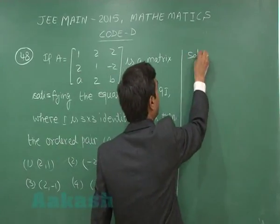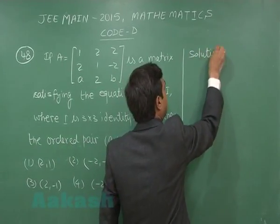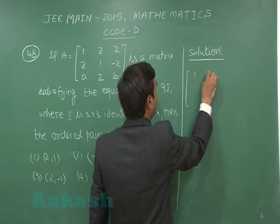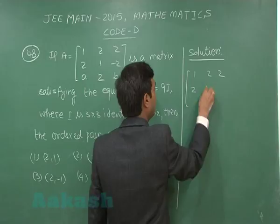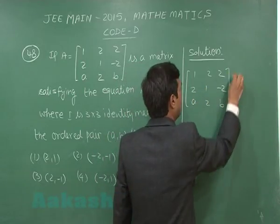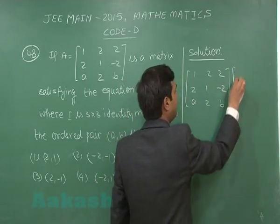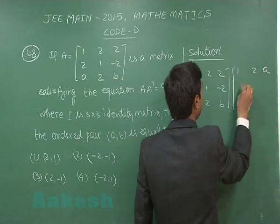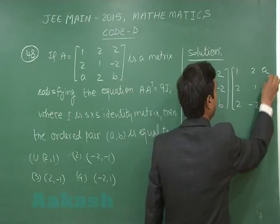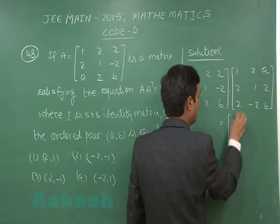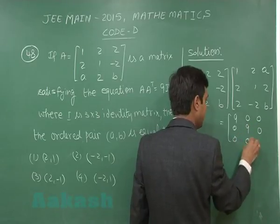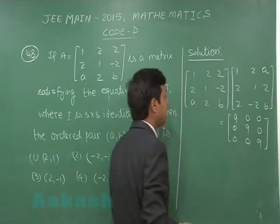Solving it: the matrix [1, 2, 2; 2, 1, −2; A, 2, B] multiplied with its transpose [1, 2, A; 2, 1, 2; 2, −2, B] equals [9, 0, 0; 0, 9, 0; 0, 0, 9].